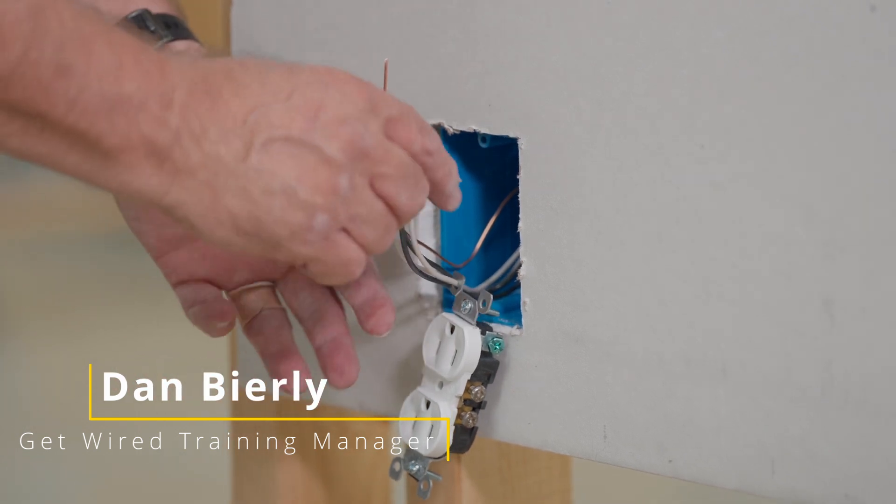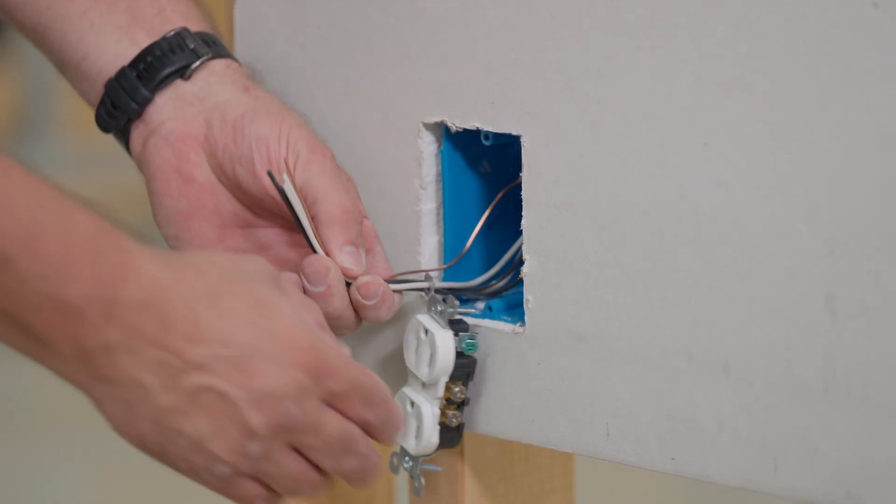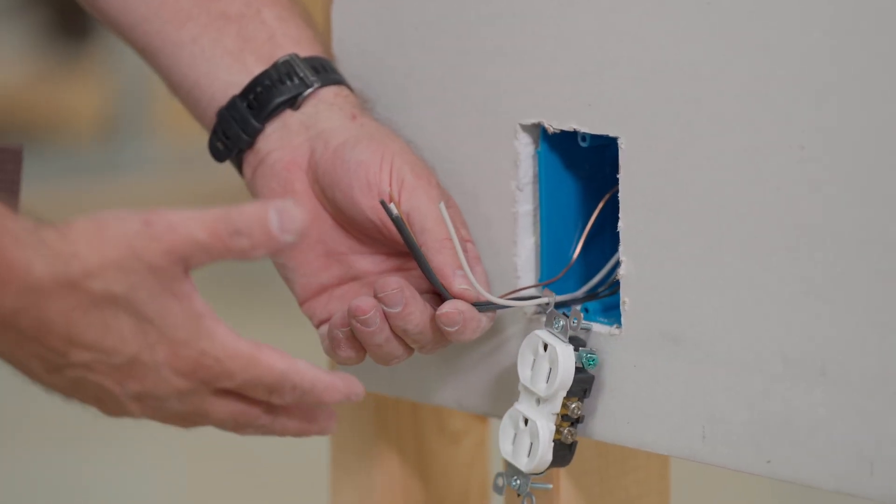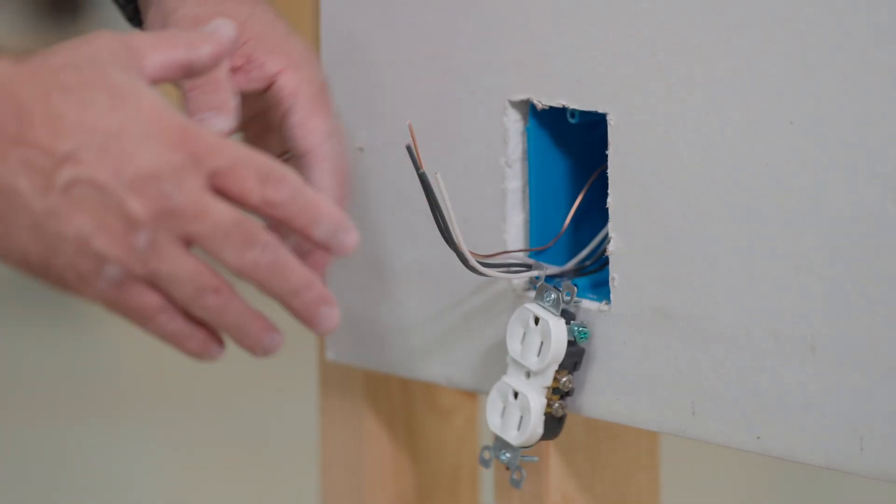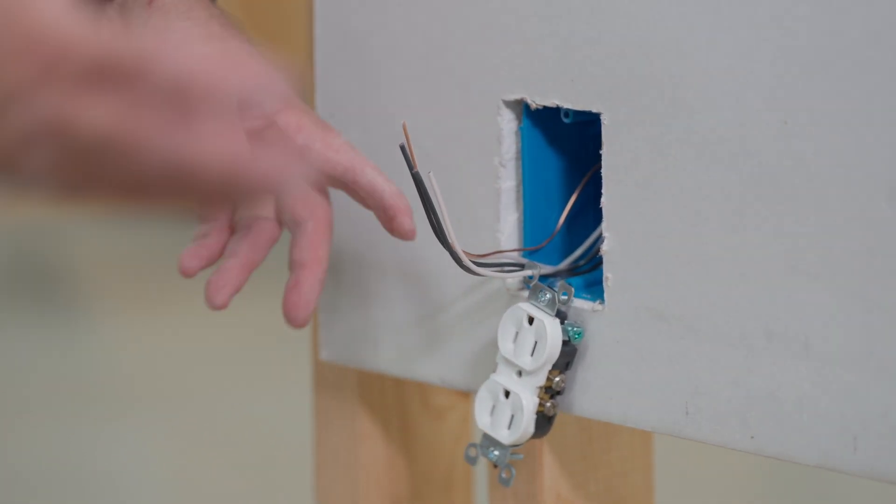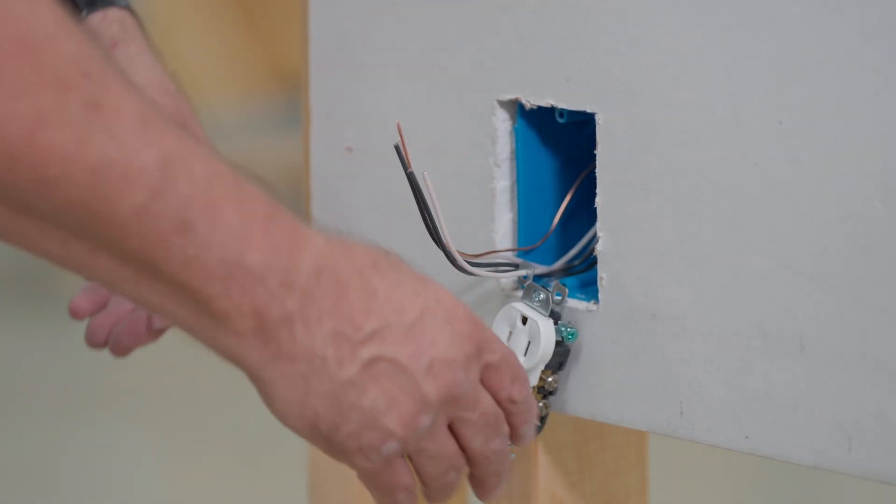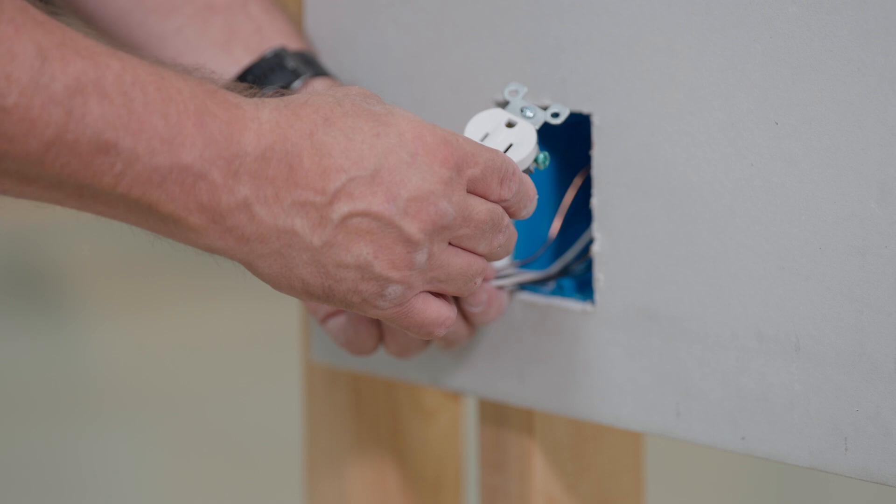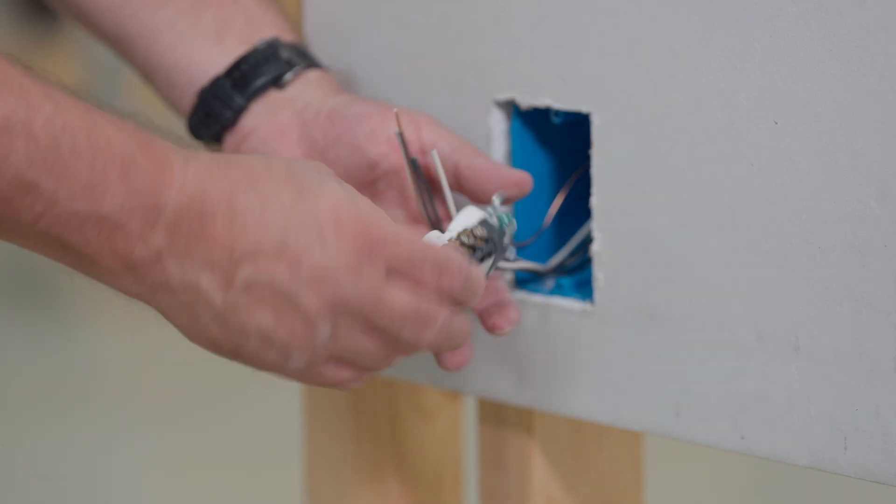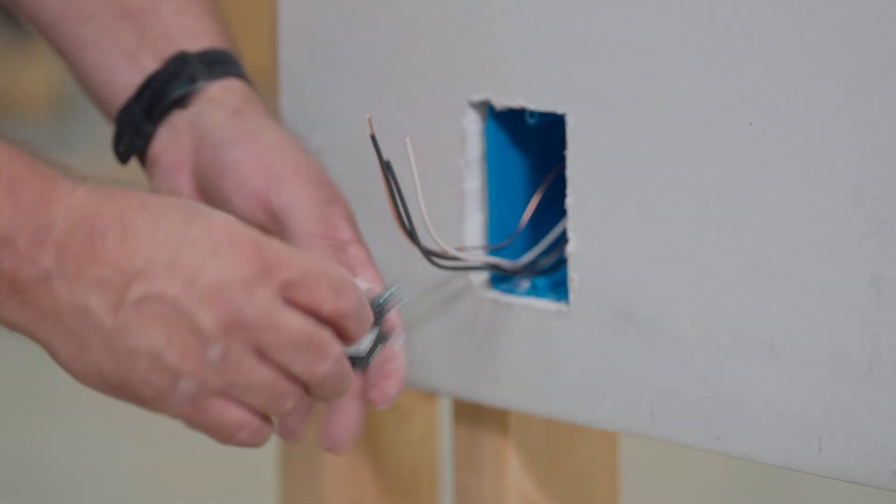Alright, now when we come to this receptacle here, you'll see that the receptacle is just hanging from there. Quite often when we come in to trim, we don't just trim one receptacle, we trim an entire building. So some of them will lay out, they'll pull all the wires out and lay out all the different types of devices, make sure that it's the right device for the right space. This is a simple residential receptacle, so we're going to wire this up accordingly.